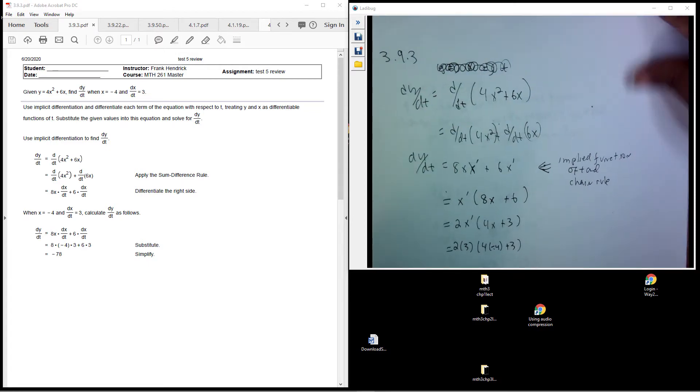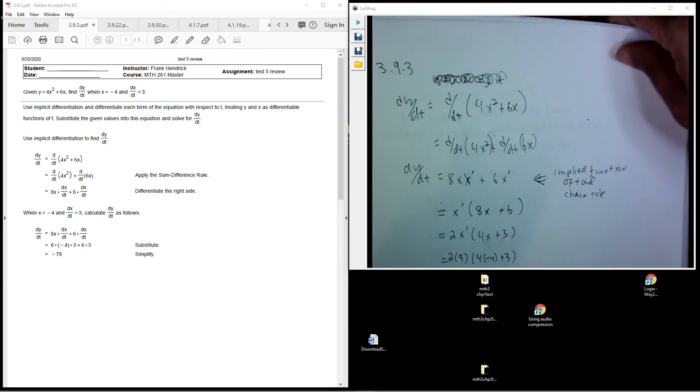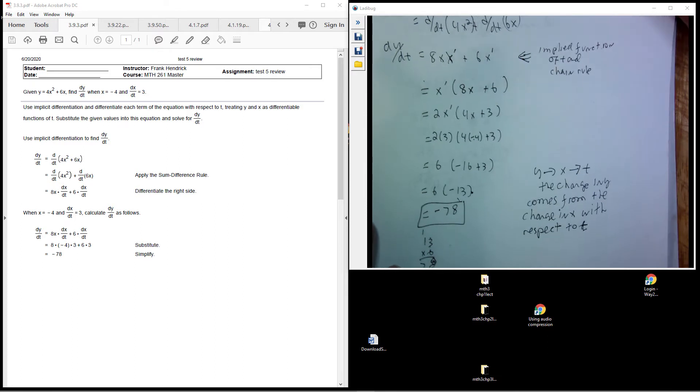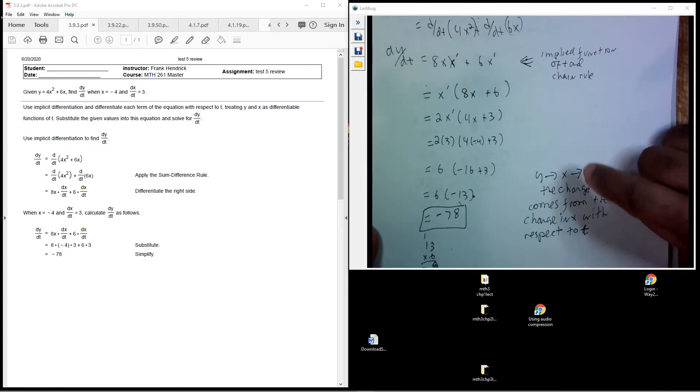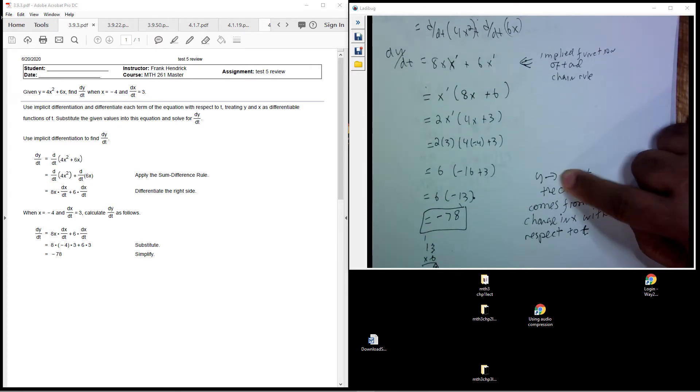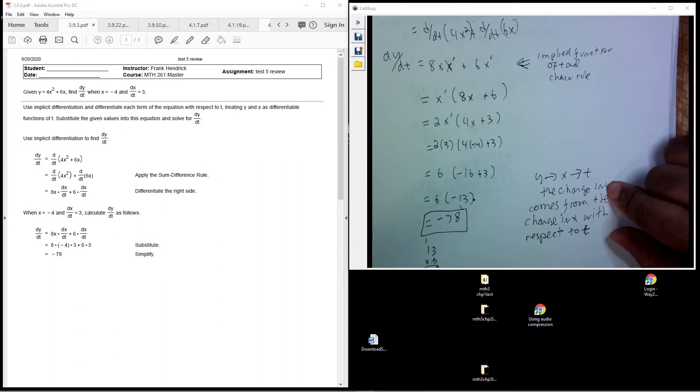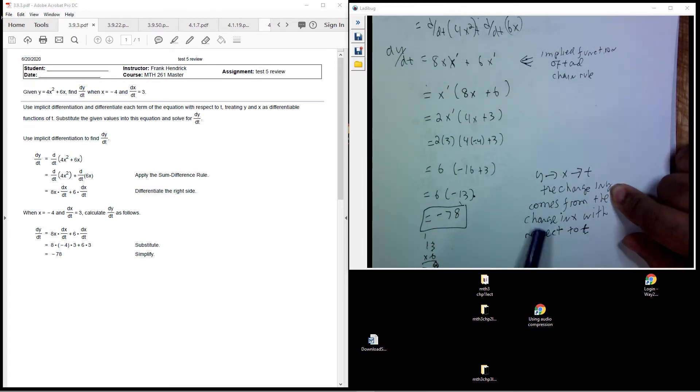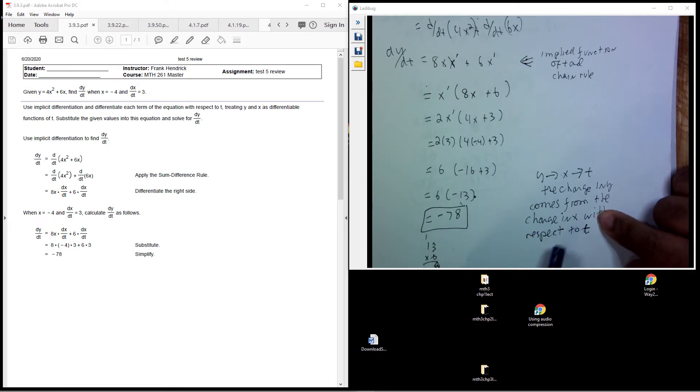So what happens here, let me show this part at the beginning. Y maps to x, and then x maps to t. So what is the change in y? It comes from the change in x with respect to t.